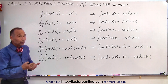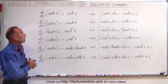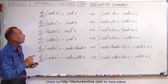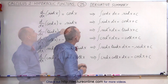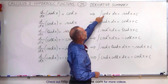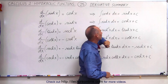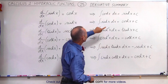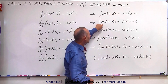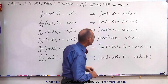Now that we know that, we can play it in reverse, so to speak. We can turn things around: if we take the integral of the hyperbolic cosine, we get back the hyperbolic sine, and if we take the integral of the hyperbolic sine, we get back the hyperbolic cosine.